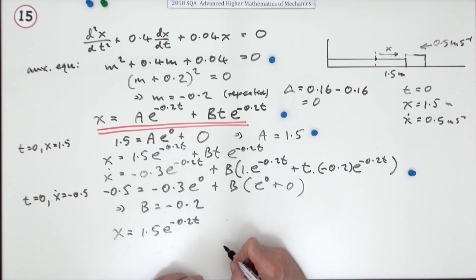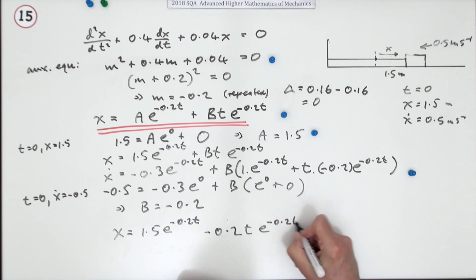So x is going to be: A was 1.5e to the negative 0.2t, B is negative, so minus 0.2t times e to the negative 0.2t. And there's five marks for you.